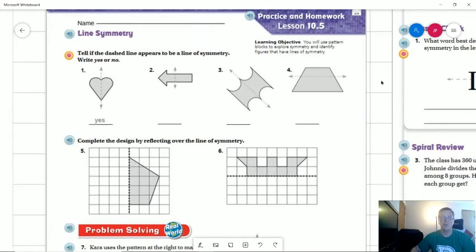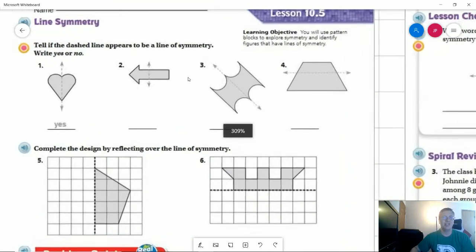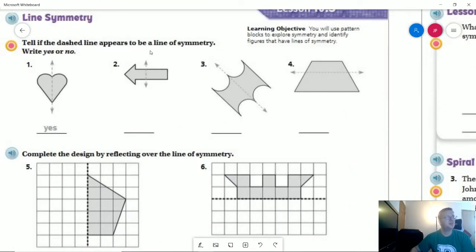Number two, we are trying to figure out if we have a line of symmetry. We do have a line that goes more or less through the middle of the shape from top to bottom, but these sides are not symmetrical. So that would be a no.